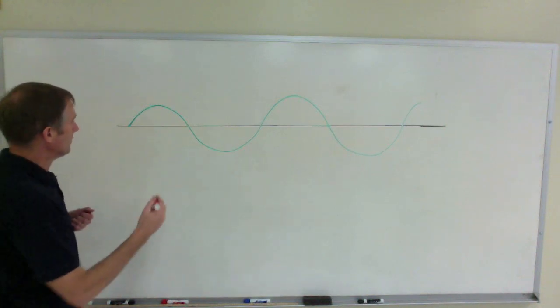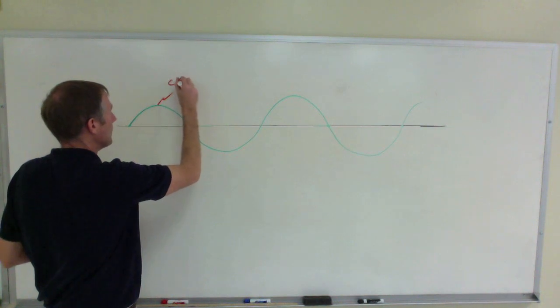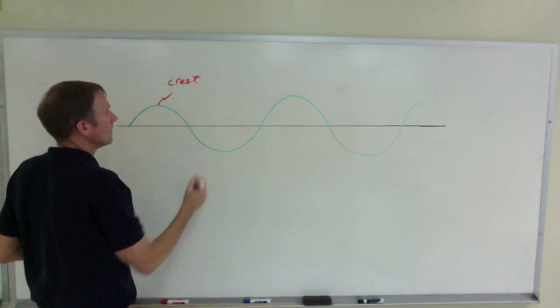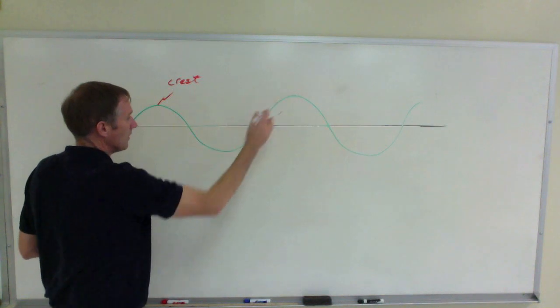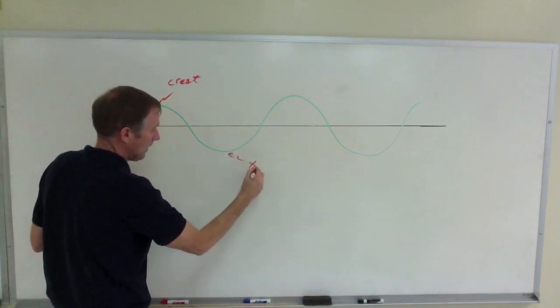Here's some terminology. The top of the wave is called a crest. Crest here, a crest there. The bottom of the wave is called the wave trough.